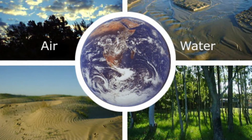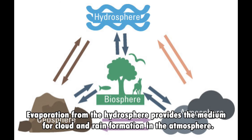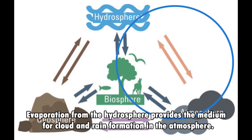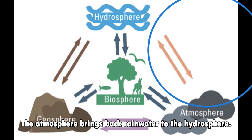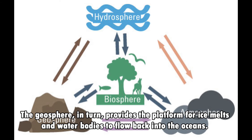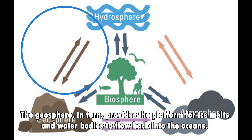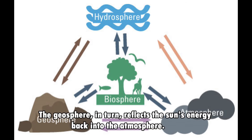All the spheres in the system interconnect and overlap — no sphere works on its own. Consider the diagram above. Evaporation from the hydrosphere provides the medium for cloud and rain formation in the atmosphere. The atmosphere brings back rainwater to the hydrosphere. Water provides the moisture and medium for weathering and erosion of rocks in the geosphere. The geosphere in return provides the platform for ice melts and water bodies to flow back into the ocean.